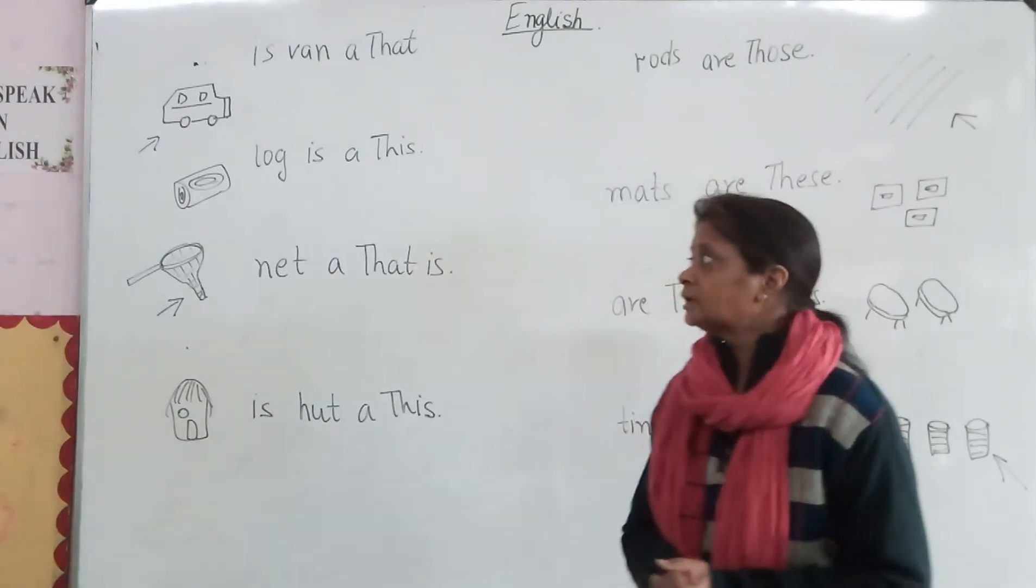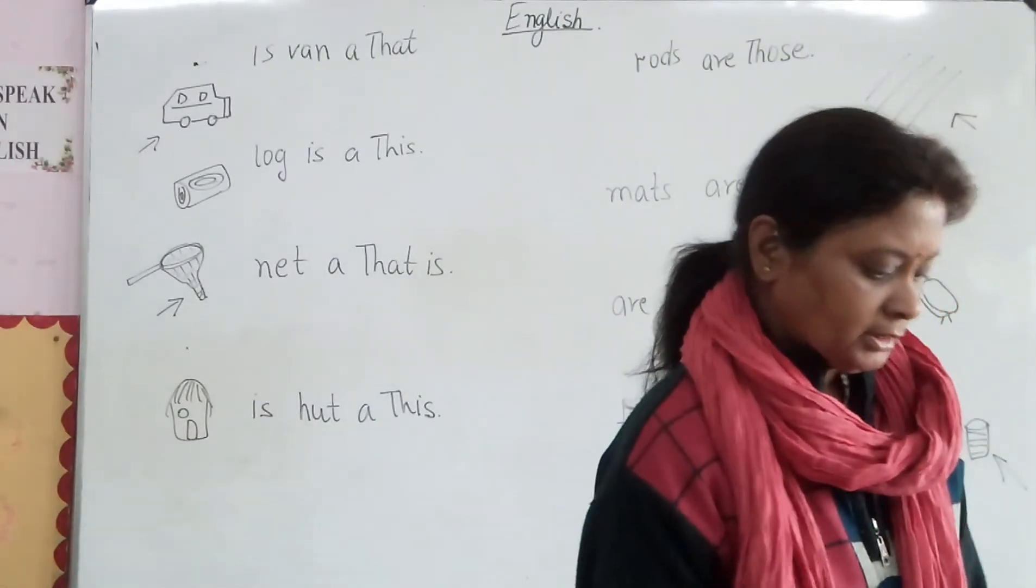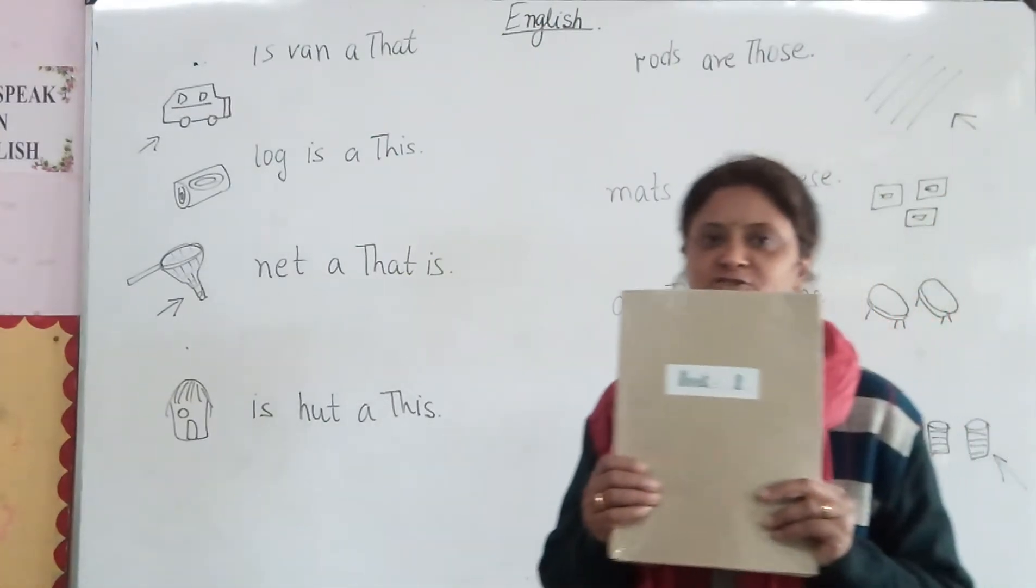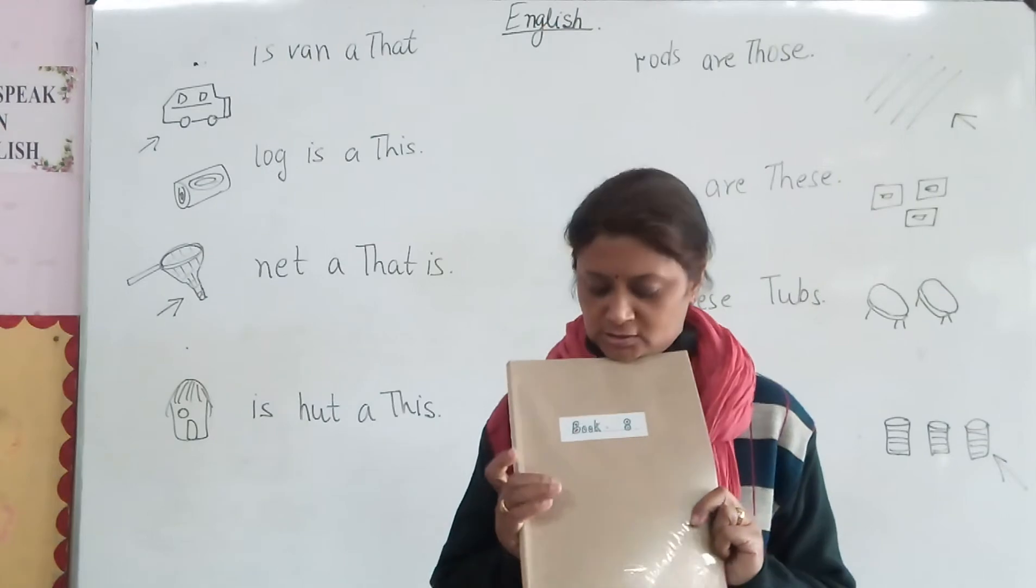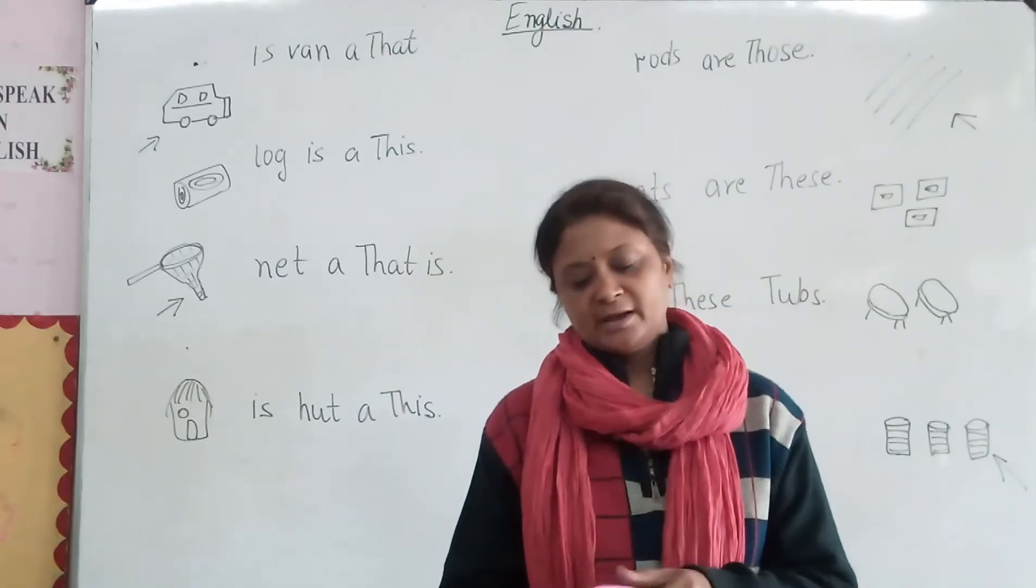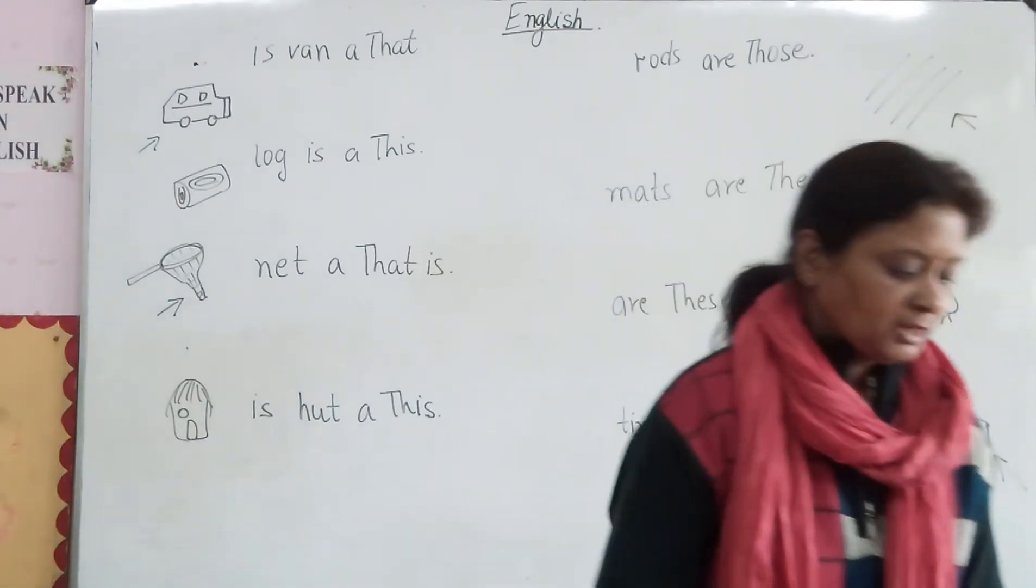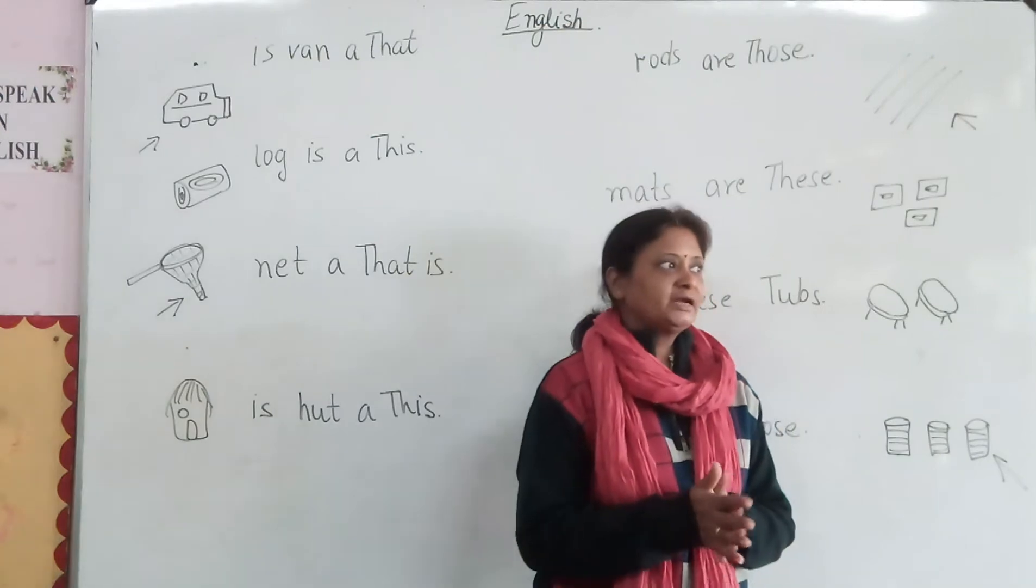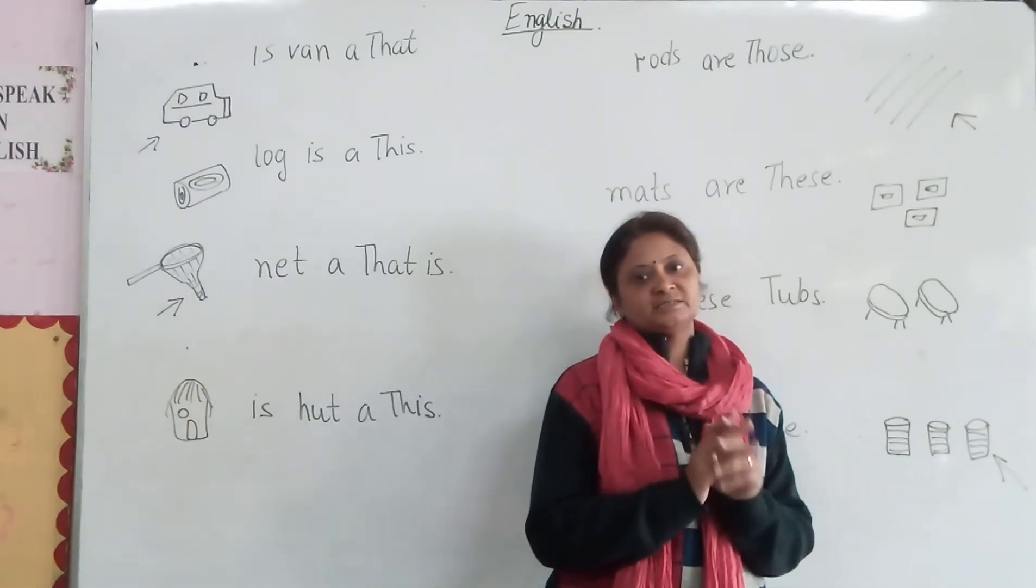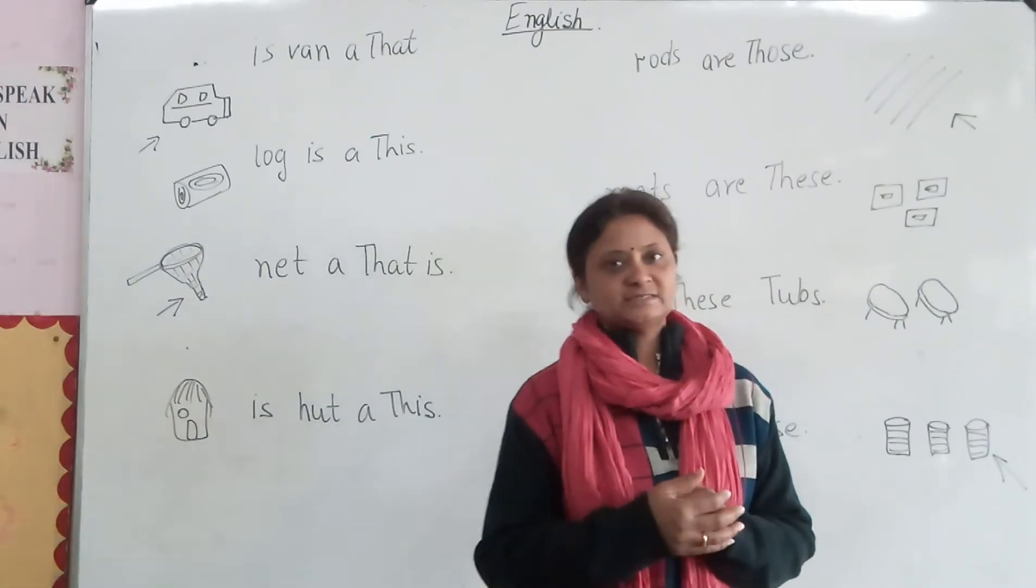Hello everyone. Today we are going to start a new book and this is your last book of the session of the Apogee class. This is Book A. So today we are going to start the new book and we are going to finish number two Wednesday. Now you have started making sentences that this is our land, that is our land and these are apples and those are clouds.